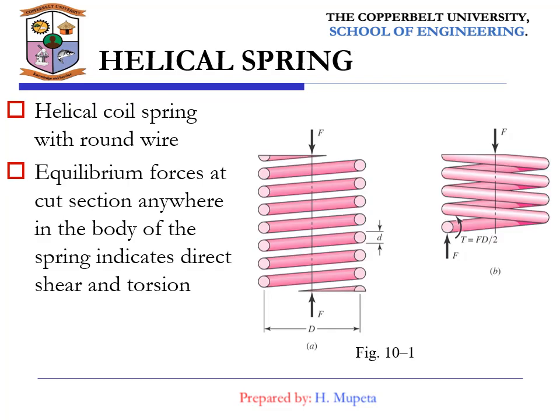Helical springs are the most common and probably the most widely used. Helical springs may be used to support compressive loads — like pushing something — or tensile loads from pulling, or torsional moments from something twisting. When you look at figure 10.1, the capital D denotes the mean-coil diameter, and the small d denotes the wire diameter.